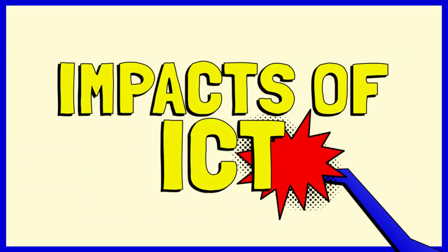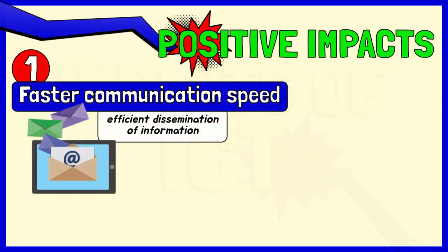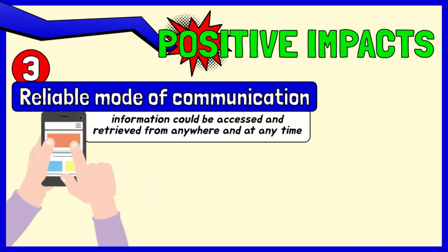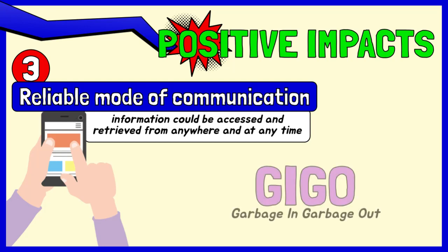Let's identify some of the impacts of ICT on society, starting with the positive impacts. Faster communication speed: now with the internet, news or messages are sent via email to friends, business partners, or to anyone efficiently. Lower communication cost: it allows people to have access to large amounts of data at a very low cost. Reliable mode of communication: with reliable computers and the internet, information can be accessed and retrieved from anywhere at any time. Bear in mind that the quality of output produced is based on the input — this is related to the term garbage in and garbage out, which means bad input normally produces bad output.